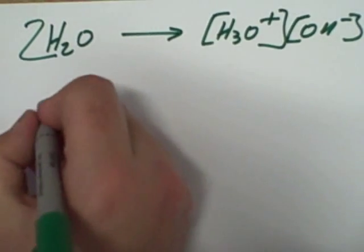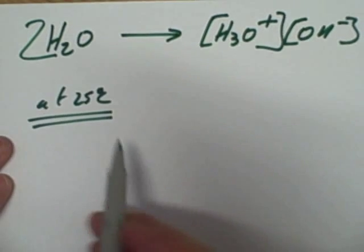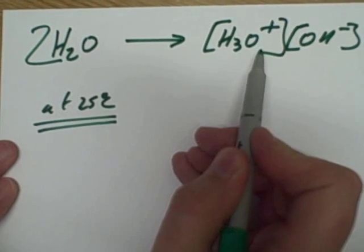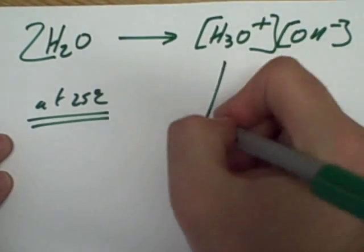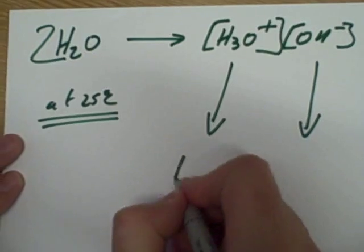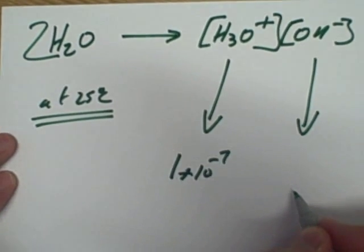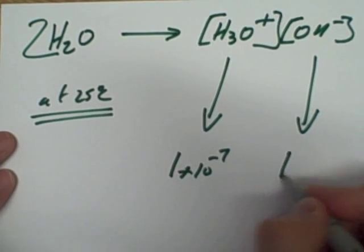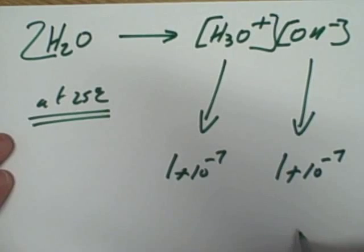Now at 25 degrees Celsius, it's quite important to keep that temperature constant, water forms these ions, H3O plus and OH minus. Lots of electrochemical experiments have shown that the concentration of your H3O plus ion is 1 times 10 to the minus 7, and there's no shock here, the OH minus concentration is exactly the same, 1 times 10 to the minus 7.